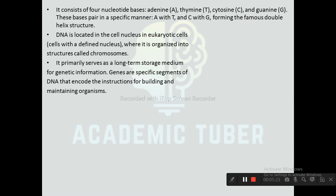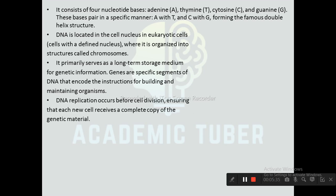DNA is located in the cell nucleus in eukaryotic cells, where it is organized into structures called chromosomes. It primarily serves as a long-term storage medium for genetic information. Genes are specific segments of DNA that encode the instructions for building and maintaining organisms. DNA replication occurs before cell division, ensuring that each new cell receives a complete copy of genetic material. DNA carries hereditary information, which is transmitted from mother cell to daughter cells during cell division.